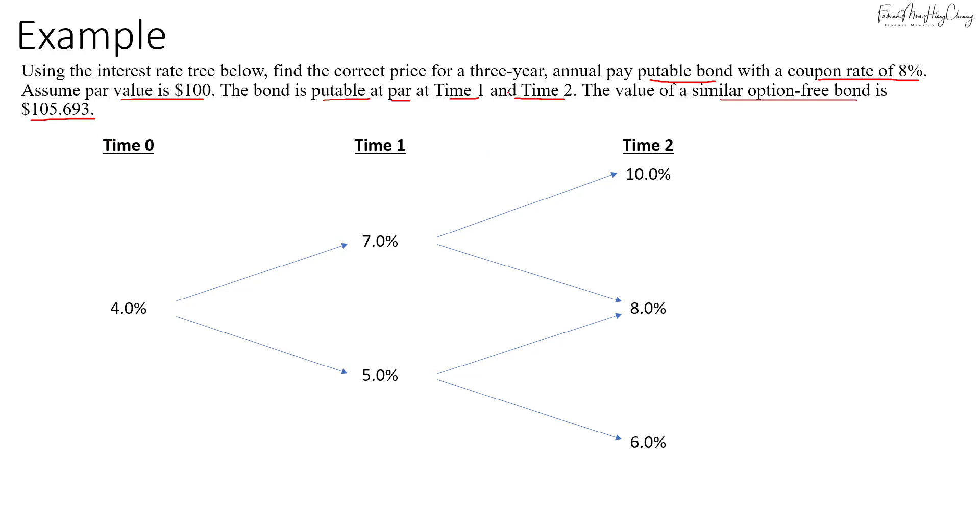We'll do the valuation the same way as in previous videos. At Time 3, we have $108, which is the par value plus the coupon. Then I will discount them back based on their previous period's interest rate. For this, we'll take $108 discounted at 10%, which gives us 98.182.